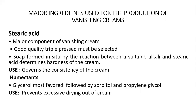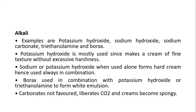The ingredients for vanishing cream include stearic acid, which is the major component and governs the consistency and hardness of the cream via a soap formed in-situ by reaction between the alkali and stearic acid. Humectants such as glycerol (most favoured), sorbitol, and propylene glycol prevent excessive drying of the cream. Alkalis used include potassium hydroxide, sodium hydroxide, sodium carbonate, triethanolamine, and borax. Potassium hydroxide is mostly used as it produces a cream of fine texture without excessive harshness. Sodium or potassium hydroxide when used alone forms a hard cream and hence is always used in combination. Borax is used in combination with potassium hydroxide or triethanolamine to form a white emulsion.